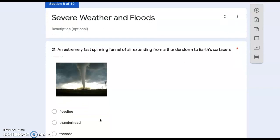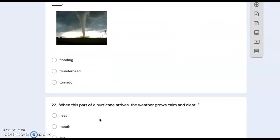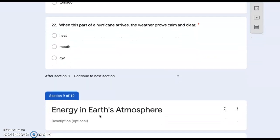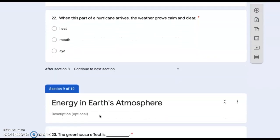Severe weather and floods. Number twenty-one: an extremely fast spinning funnel of air extending from a thunderstorm to Earth's surface is flooding, thunderhead, or tornado? Twenty-two: when this part of a hurricane arrives, the weather grows calm and clear. Heat, mouth, or eye?